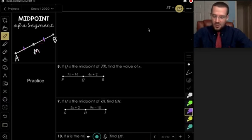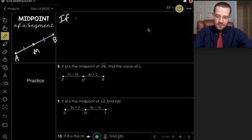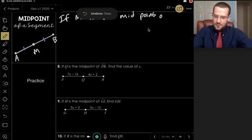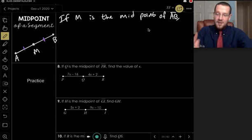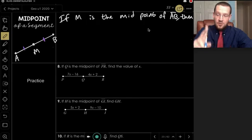And so we will say that if M is the midpoint of the segment AB, then we have some things that are true. Then there are some things that will be true. Two things will be true.